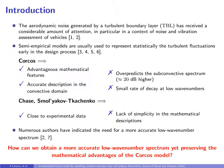On the contrary, models such as Chase, Smol'yakov-Tkachenko are more accurate in their range but they lack simplicity in the mathematical description. In this perspective, our research focuses on the need for a more accurate low wave number spectrum still preserving the mathematical advantages of the known Corcos model.